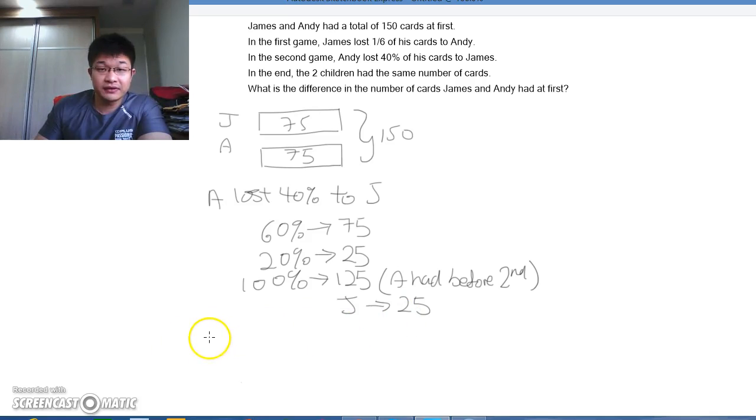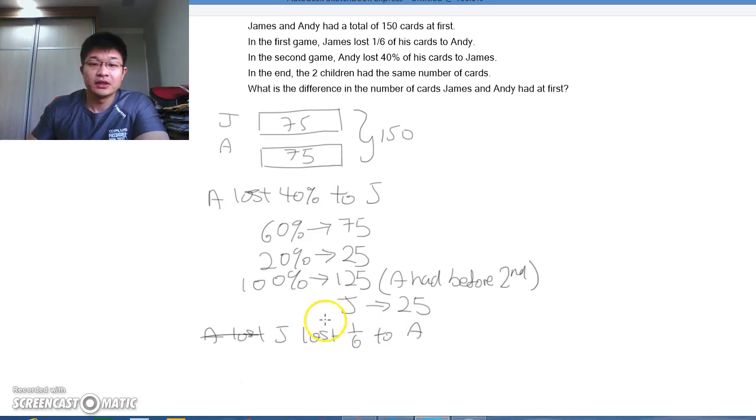So what happens during the first game is that Andy actually lost, sorry, James. James lost 1/6 to Andy.